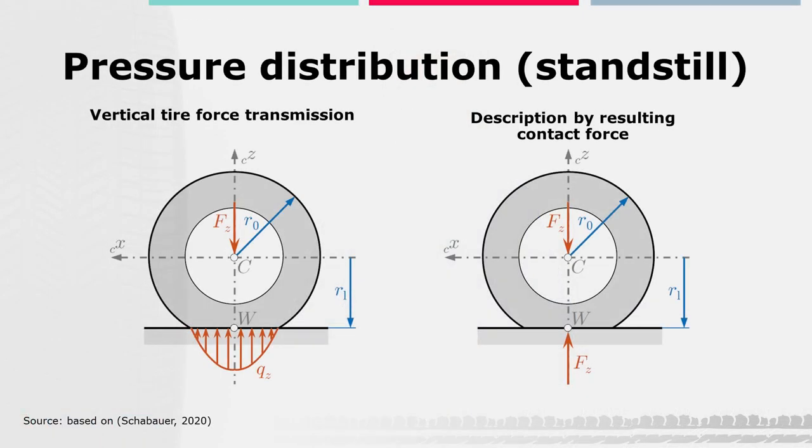Finally, in the last part of this lecture, let's take a closer look at the vertical force transmission mechanisms within the contact patch. In general, when a non-rotating tire without camber is loaded and pressed to a flat surface, the vertical load FZ produces a vertical pressure distribution QZ in the contact patch, as shown here on the left. The vertical pressure distribution in the contact area shows a symmetric shape. It is symmetric both in the longitudinal plane, as shown here, and in the lateral plane of the tire.